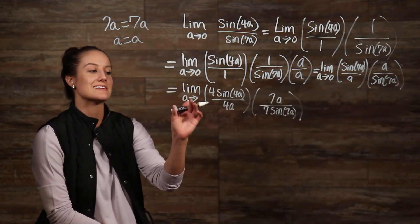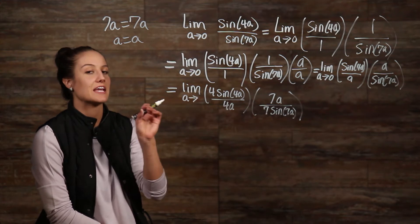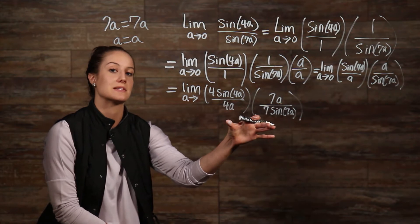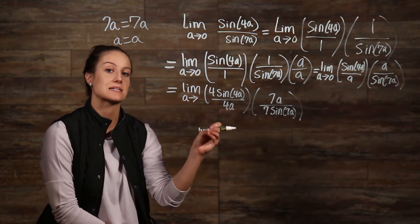Then, we can move these constants out in front of our limit. And if you recall, one of our limit properties tells us that we can break these two up into two separate limits, take the limit, and then put them back together.